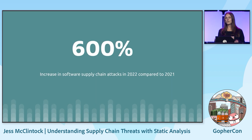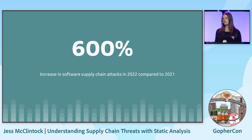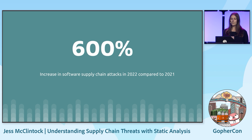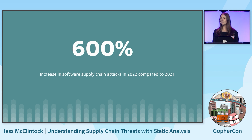To provide some motivation for why we care about these problems: from 2021 to 2022, there was a 600% increase in software supply chain attacks. There are many reasons why this could have happened — it could be an availability bias, or maybe there's just more code being written in general. But these numbers are big enough that it's quite clear this is a significant problem that we need to understand and address.